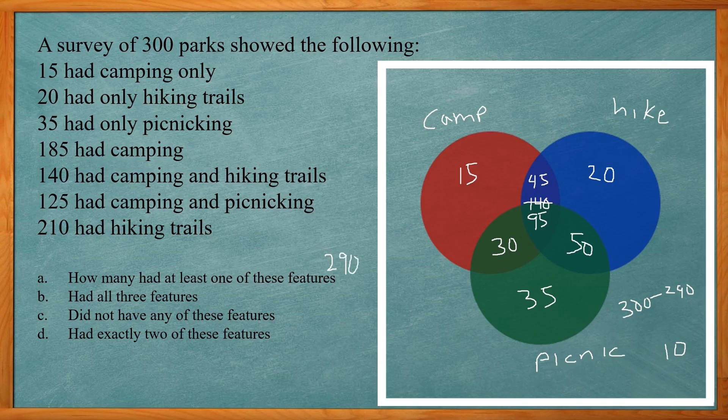And how many had all three features? We said that's in the middle so that's gonna be 95. And how many did not have any of these features? That's the one that's outside all the circles. That's gonna be 10.